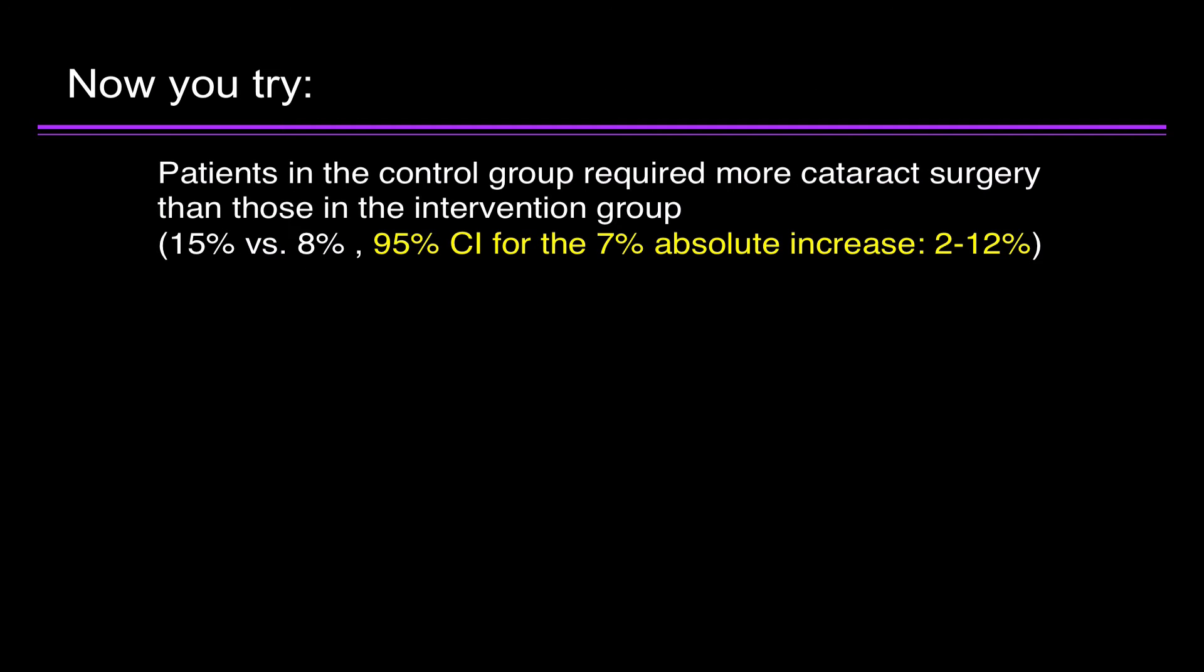So now you try this. Patients in the control group required more cataract surgery than those in the intervention group: 15 versus 8%, 95% CI for the 7% absolute increase. If you're not familiar with absolute increase, that's simply 15% minus 8%. The 95% CI for it is somewhere between 2 and 12%.